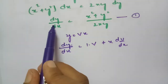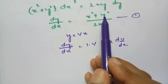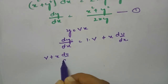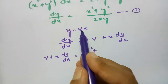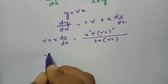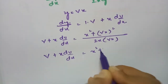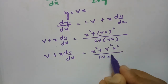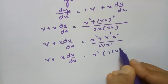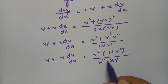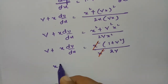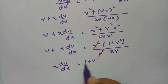Substituting dy/dx as v + x·(dv/dx), and replacing y with vx, we get: v + x·(dv/dx) = (x² + (vx)²) / (2x·vx). This simplifies to v + x·(dv/dx) = (x² + v²x²) / (2vx²). Taking x² common in the numerator gives (1 + v²) / 2v, and we can cancel x².